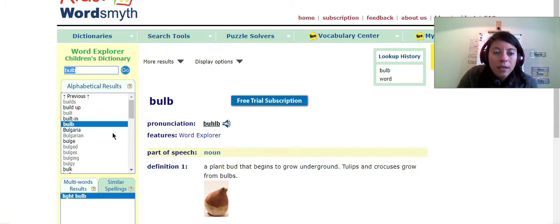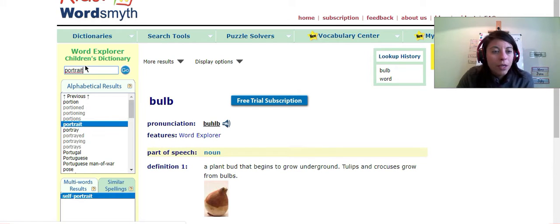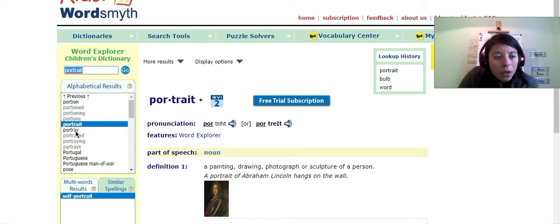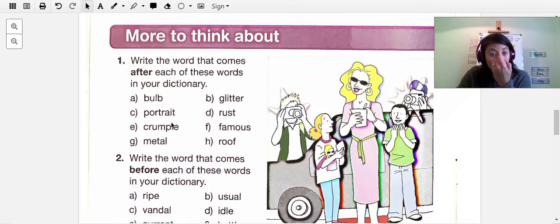Portrait. You do the exact same thing. You're going to go and write portrait, not protein, portrait. And then you go and you look at the word right after, here on the left where it has the alphabetical results, and you can write that word here. And then you have to look them up in the dictionary to find out. It's part of the task. If you don't know what a bulb is, look it up. Try to understand it from the example.